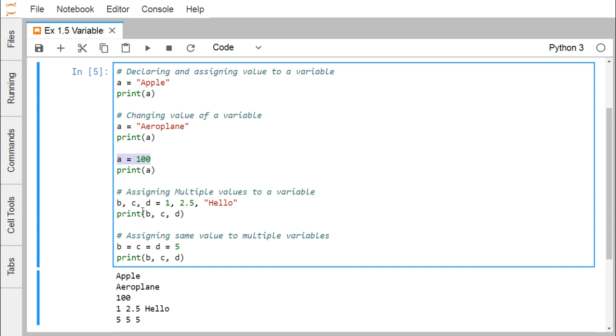Assigning multiple values to variables: b, c, d = 1, 2.5, 'hello'. All these three variables are getting assigned in the same single line. When you are printing b, c and d we are getting the outcome as 1, 2.5 and hello.